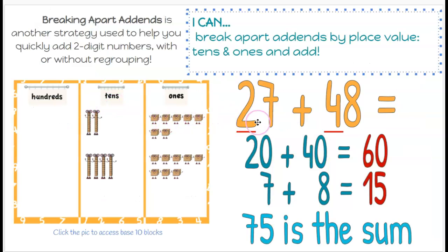Here we have 27 and 48. If you look, you see the tens are underlined, and we rewrite them. Two tens is 20, four tens is 40. Combine those, and we get 60.